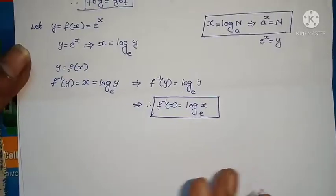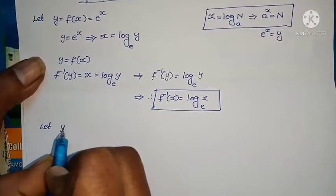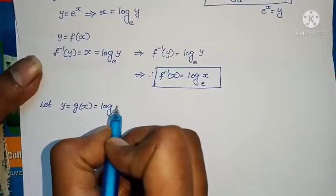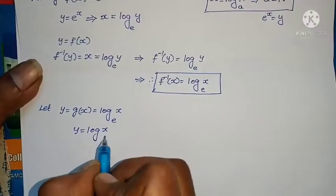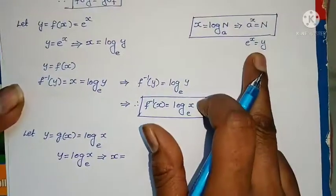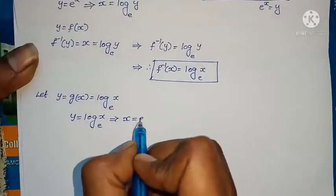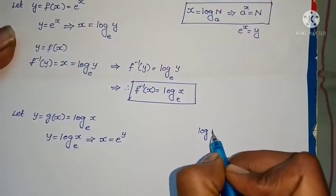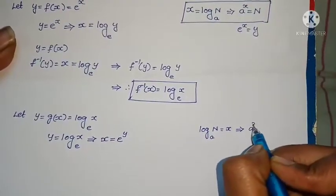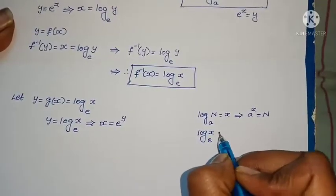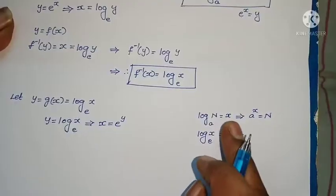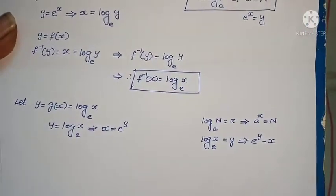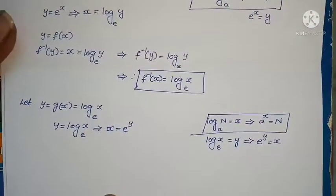Now for g inverse, do the same carefully. Let y = g(x) = log_e(x). From this formula, we get x = e^y. Same formula - just compare with the previous step.